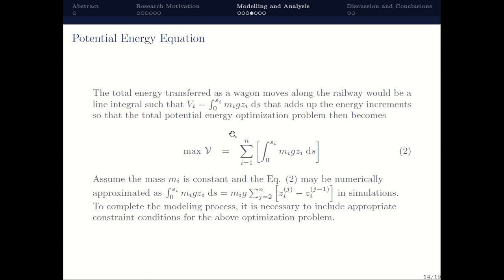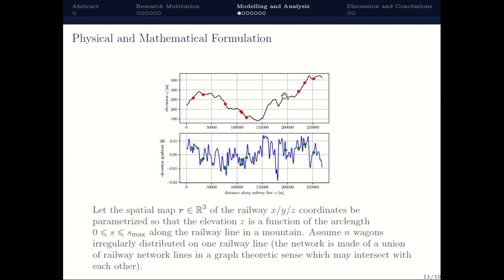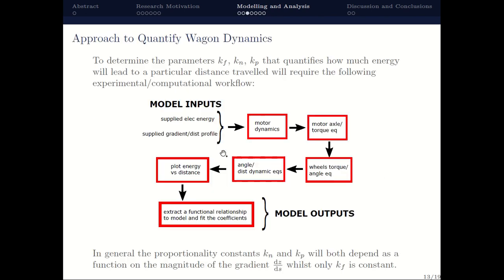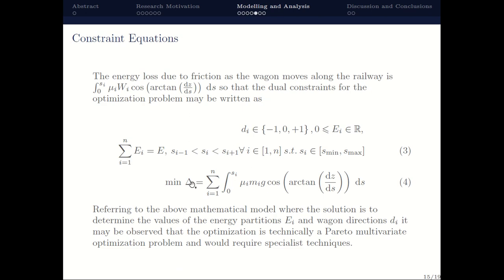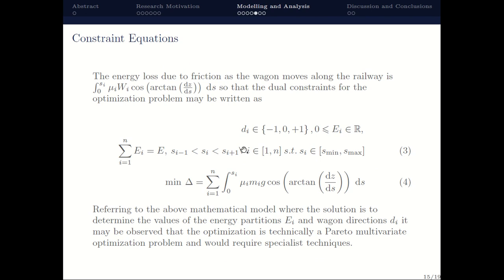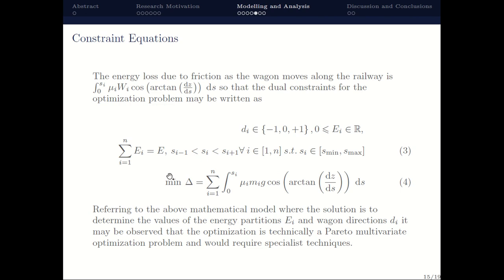We then define constraints: the energy allocated to each individual wagon must sum to the total energy, and the distances must not overlap — when one wagon moves, it must not pass over an adjacent wagon on either side. Additionally, we want to minimize energy dissipated due to friction, where mu is the coefficient of friction. The coupled system of equations one through four forms a coupled Pareto multivariate optimization problem, where technically we are maximizing potential energy while minimizing energy loss — a fairly complicated problem.